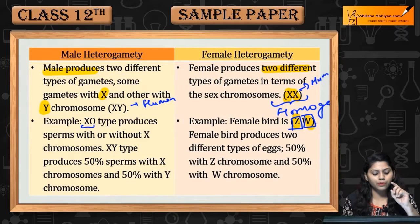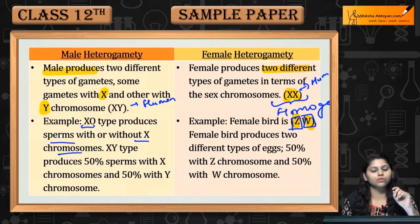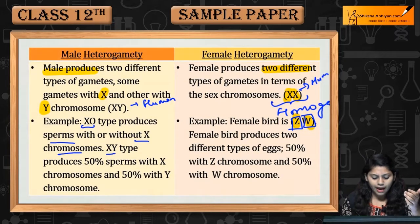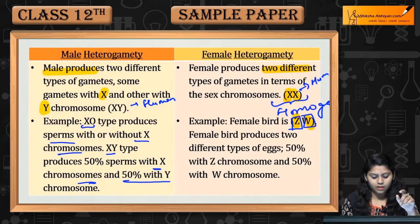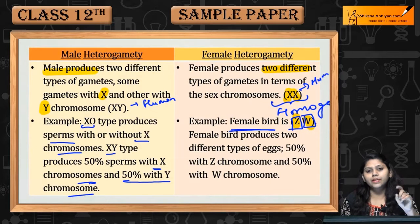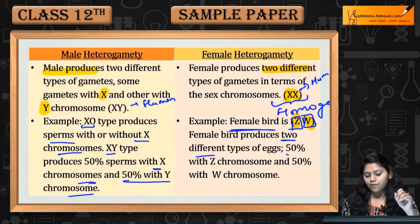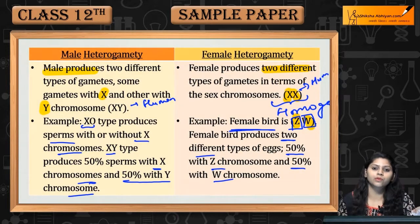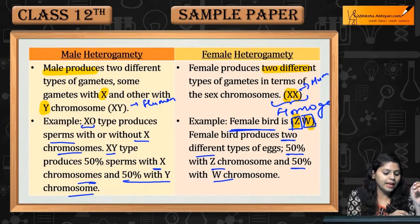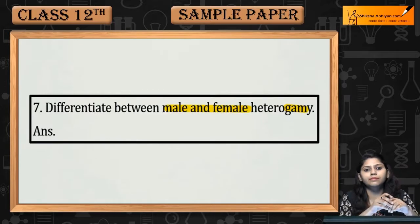Males produce sperms with or without X chromosomes — 50% sperms with X chromosomes and 50% with Y chromosomes. Female birds with ZW produce two different types: 50% Z and 50% W chromosomes. This is male and female heterogamety.